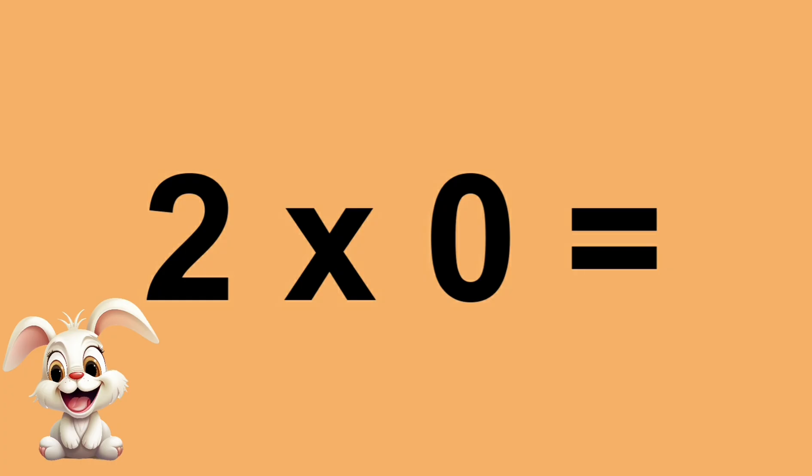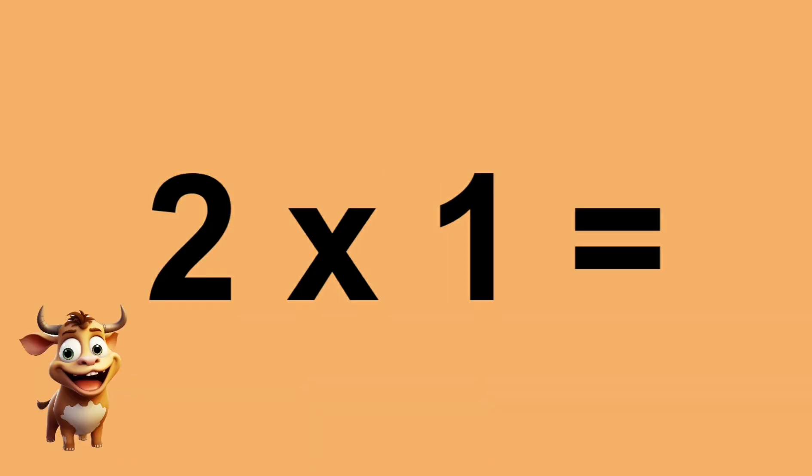1 times 12 equals 12. 2 times 0 equals 0. 2 times 1 equals 2.